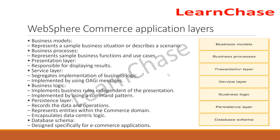There are seven layers in WebSphere Commerce: business models, business process, presentation layer, service layer, business logic layer, persistence layer, and database schema. The business model represents a sample business situation or scenario. Business process represents sample business functions and use cases. The presentation layer is responsible for displaying results. The service layer segregates implementation of business logic using BOD messages. Business logic implements business rules independent of the presentation layer. The database schema is designed specifically for e-commerce applications.